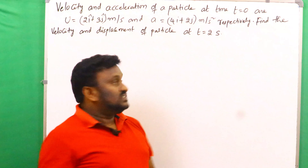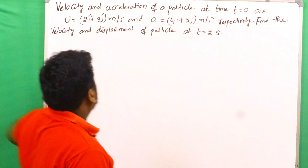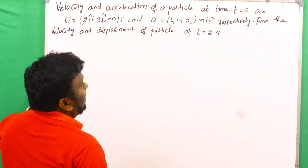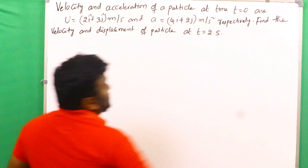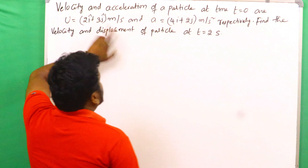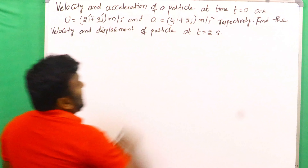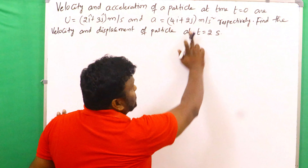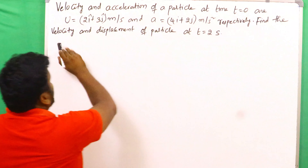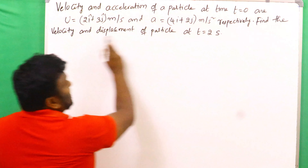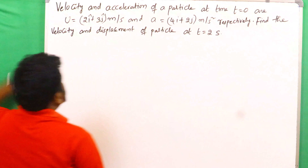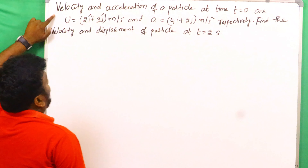Let's see one problem. The velocity and acceleration of a particle at time t equals zero: u equals 2i plus 3j meter per second and a equals 4i plus 2j meter per second squared respectively. Find the velocity and displacement of the particle at t equals 2 seconds.